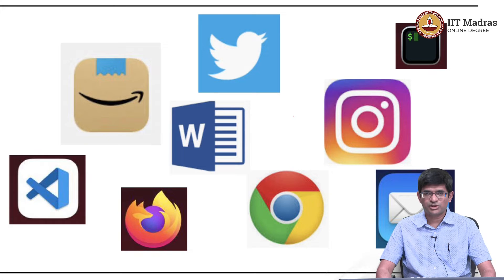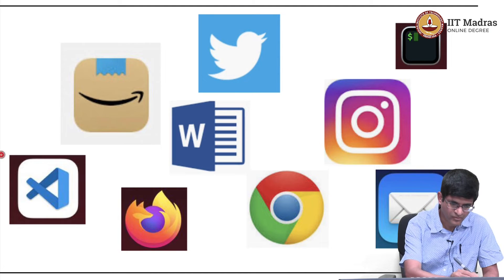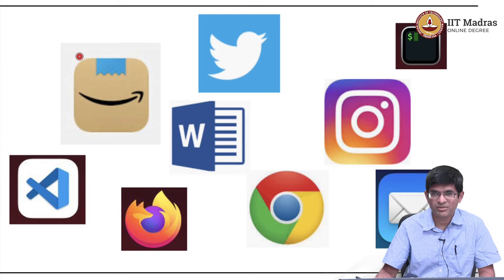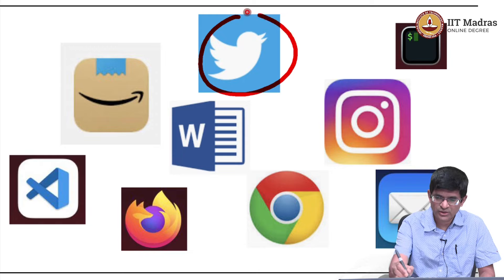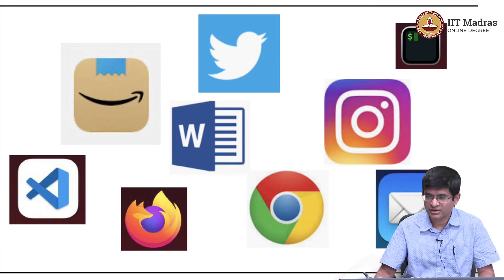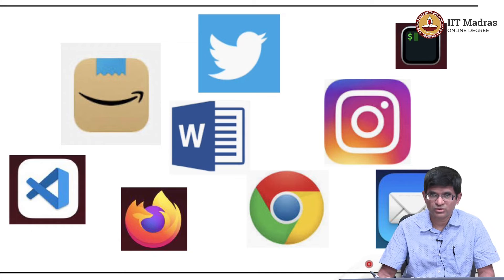These icons should be familiar to pretty much everyone these days. You have a number of different things here. For example, this smiling icon is the Amazon app. This of course is Twitter, which has been in the news for a number of reasons good and bad of late.